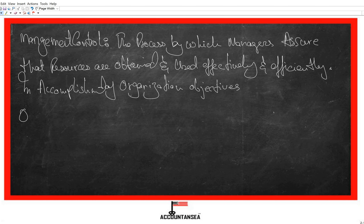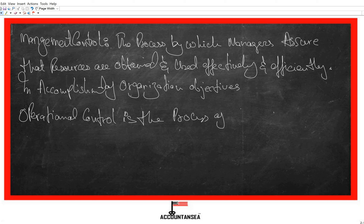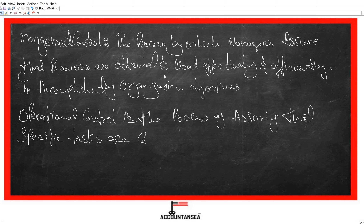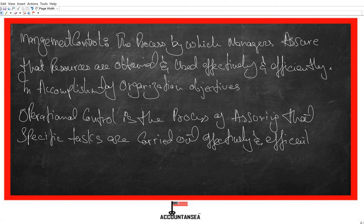And operational control is the process of assuring that specific tasks are carried out effectively and efficiently. So far so good — these are the terms which we need to know at the start of this area.